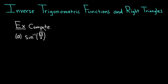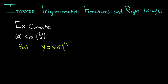Directions say compute. In part A, we have sine inverse of the square root of 3 over 2. I like to work through these very carefully. I start by calling it y — I'm going to let y be equal to the sine inverse of the square root of 3 over 2. The goal is to find y, and then we're done.